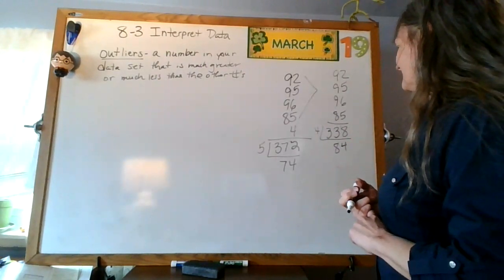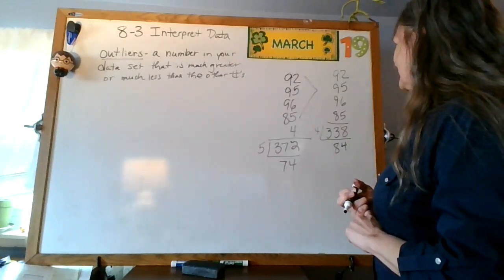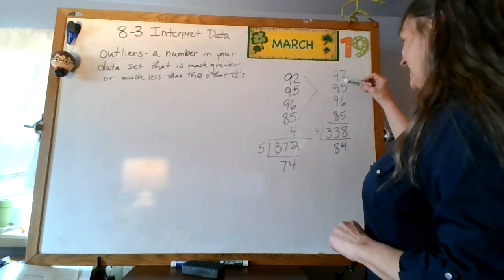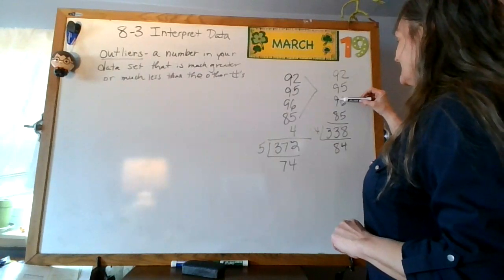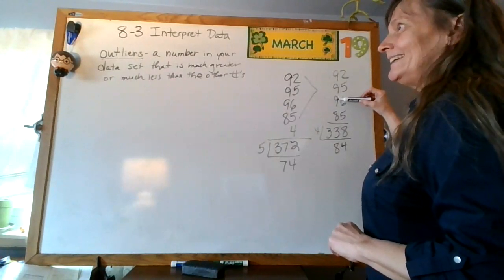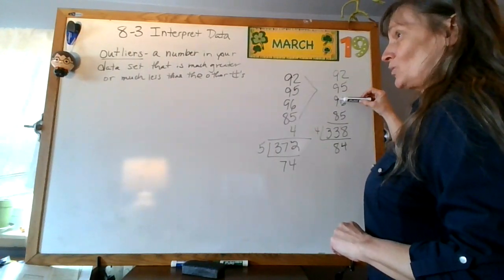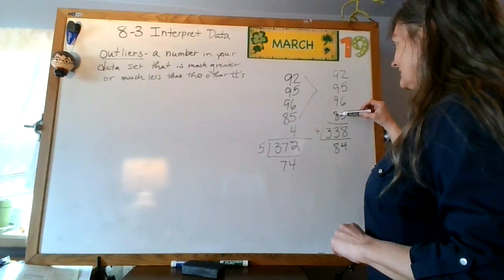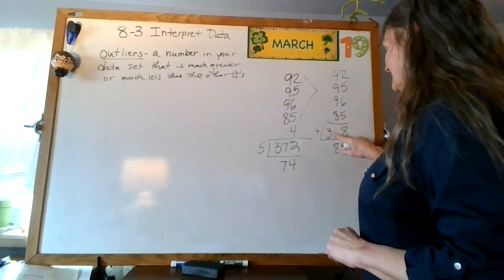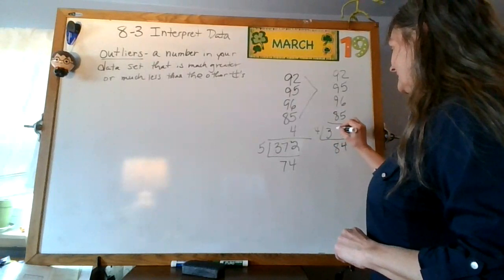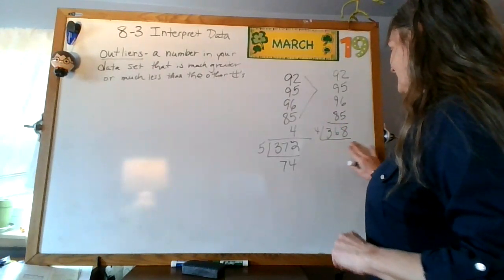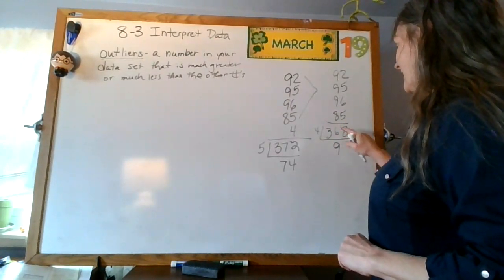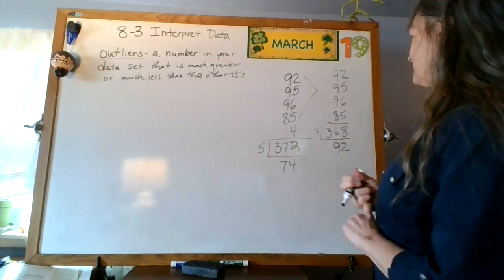All right. What did I do wrong? Something there. 10, 19, 19, 19, plus 9 is 28, 36, okay. Ah, that looks better. Okay, that goes in, there we go, 92.